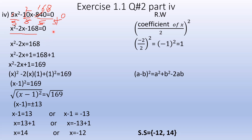The second step is to shift the constant to the right-hand side. The constant minus 8 shifts to plus 8 on the right-hand side. The third step: take the x coefficient, divide by 2. The x coefficient is minus 2, divided by 2 gives minus 1.